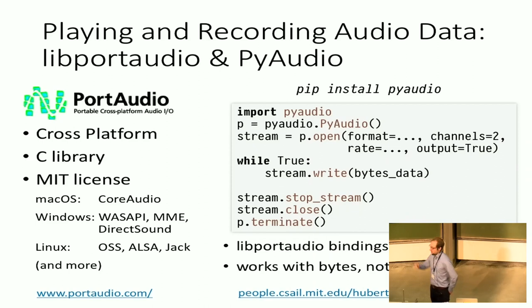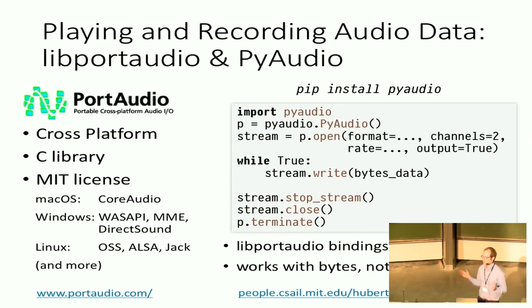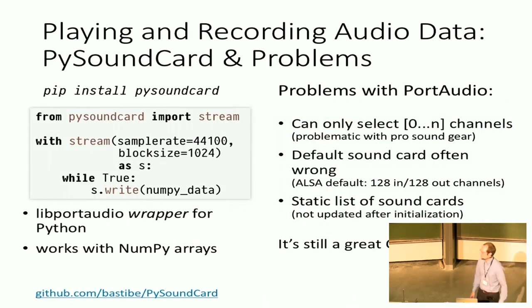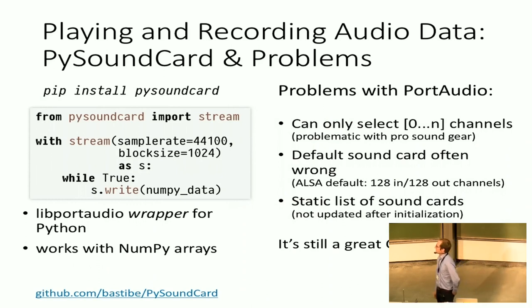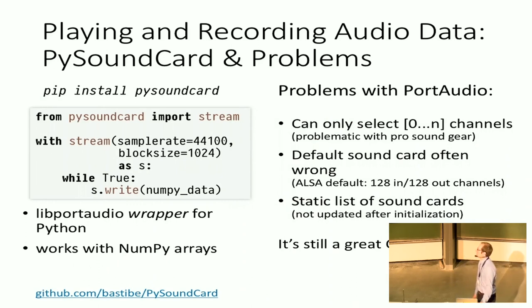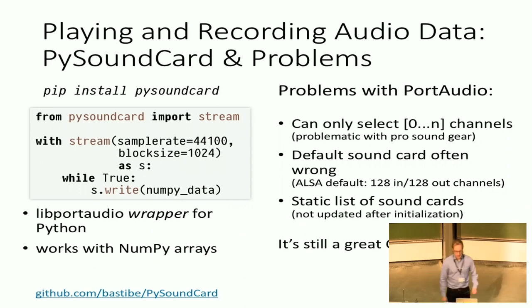When you write your data there, that's not NumPy arrays — that's just C-like data, just bytes. We're scientists; we want something nicer. We want to use NumPy. So we had to write a new library called PySoundCard, which uses PortAudio but has a bit of a nicer API. All that opening and closing from the other library is gone because we can use Python — just use a context manager. And of course it works with NumPy arrays; that's the point.